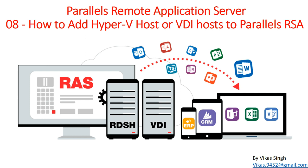We are going to add two Hyper-V host servers to Parallels Remote Application Server. Hyper-V hosts are used to deploy VDIs. The same way, you can add any hypervisor — VMware, Citrix XenServer, or Hyper-V — to run VDI virtual machine guest VMs on that platform.